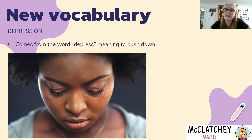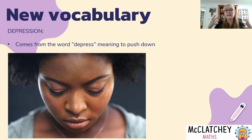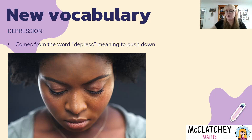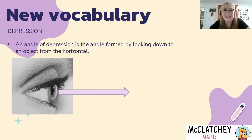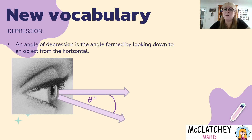Now let's look at angles of depression. This comes from the word depressed, which means to push down — you can depress a button when you push it down. A good way to remember it is that if you're feeling depressed you're feeling down, so we're looking out and then finding the angle formed when we look down from the horizontal. So before we looked up from the horizontal; now we're looking down from the horizontal.